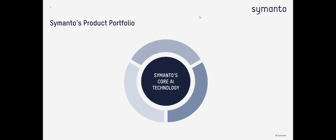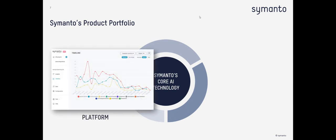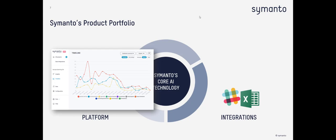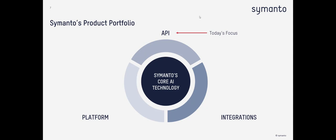Our product portfolio can be divided into three main sections. The first is our platform product — a SaaS application where someone without any technical knowledge can use our psychology AI to upload their data or connect it with data sources and get results in a visually appealing manner. The second is our integrations — for example, an add-in for Excel where you can use the deep learning technology to analyze unstructured text in cells. And the third is our API, which is today's focus.